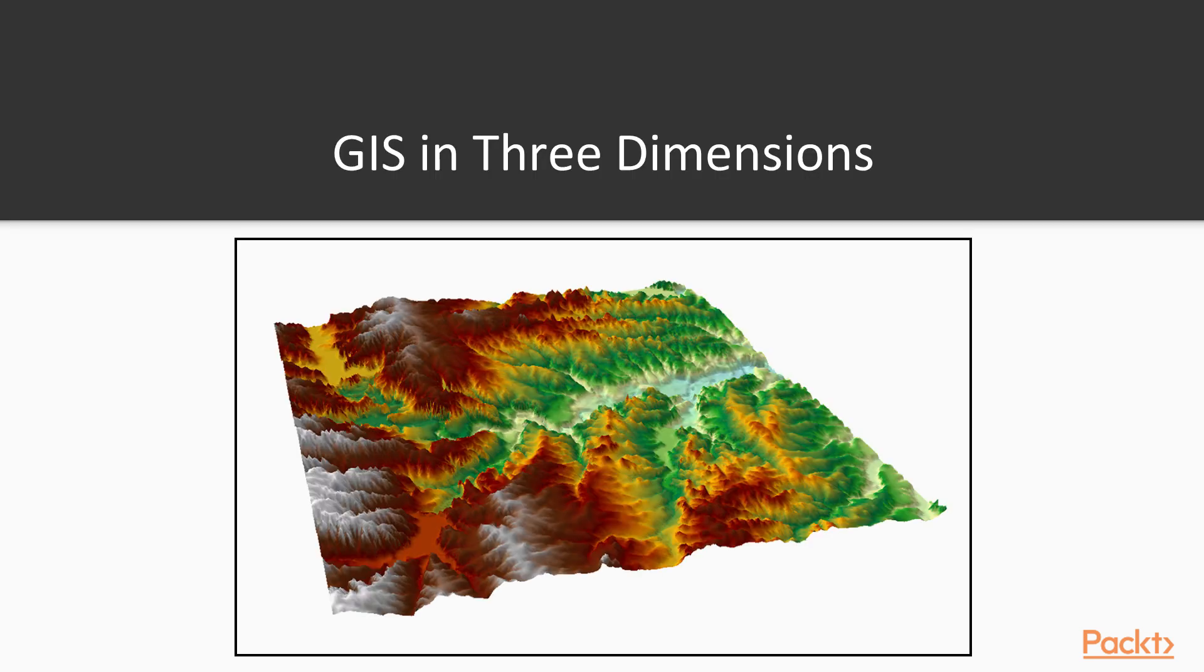In a GIS, we're tasked with trying to model and understand processes that occur on the Earth's surface, whether human or physical. In many cases, we're constrained by our flat computer screen and a basic two-dimensional model of the Earth, whether it be using a geographic or projected coordinate system.